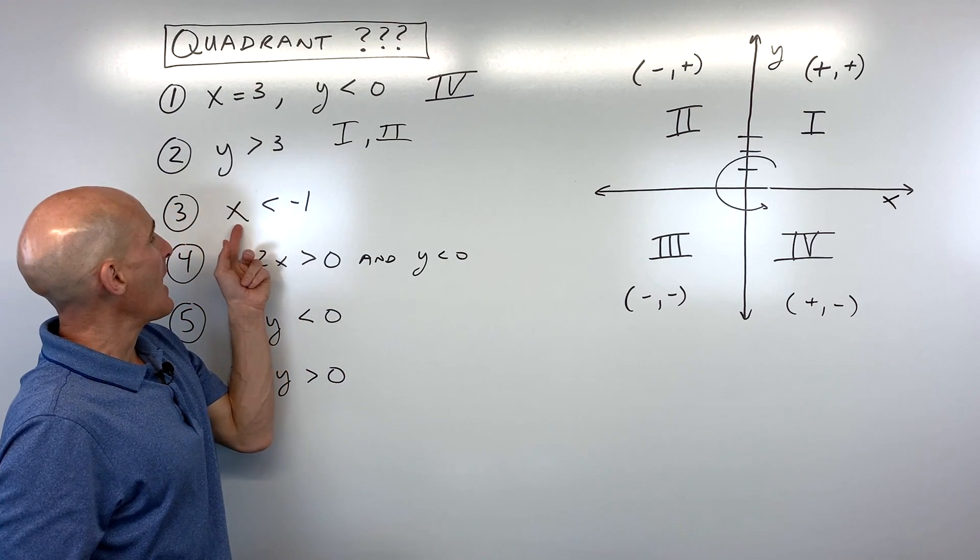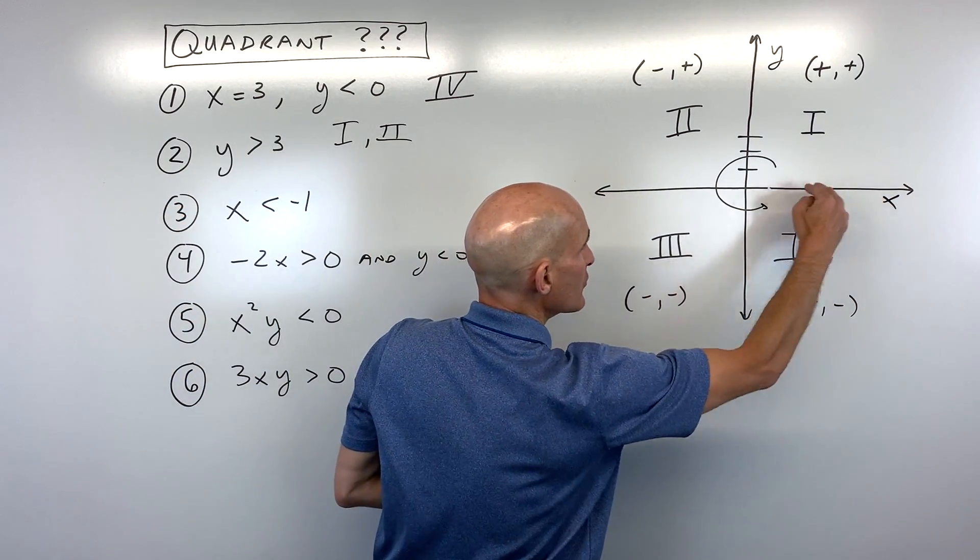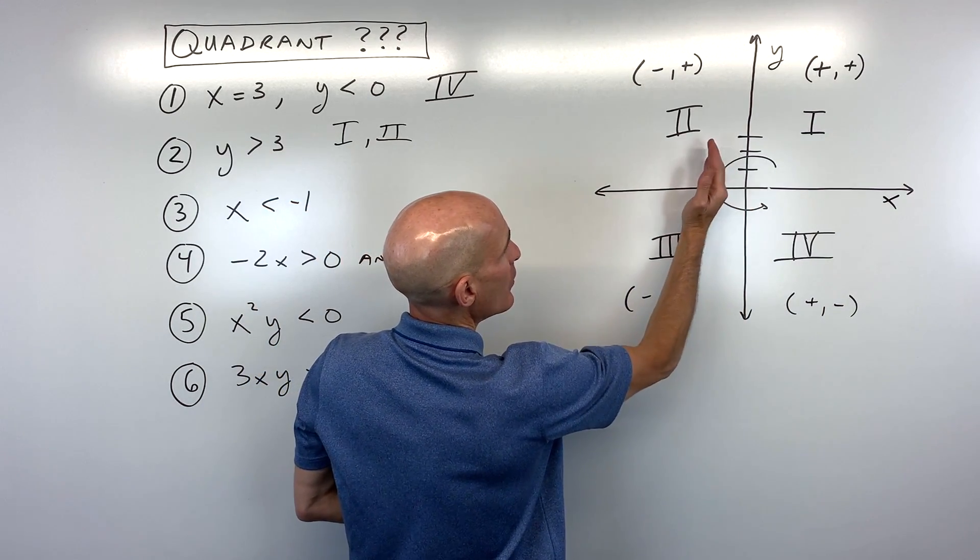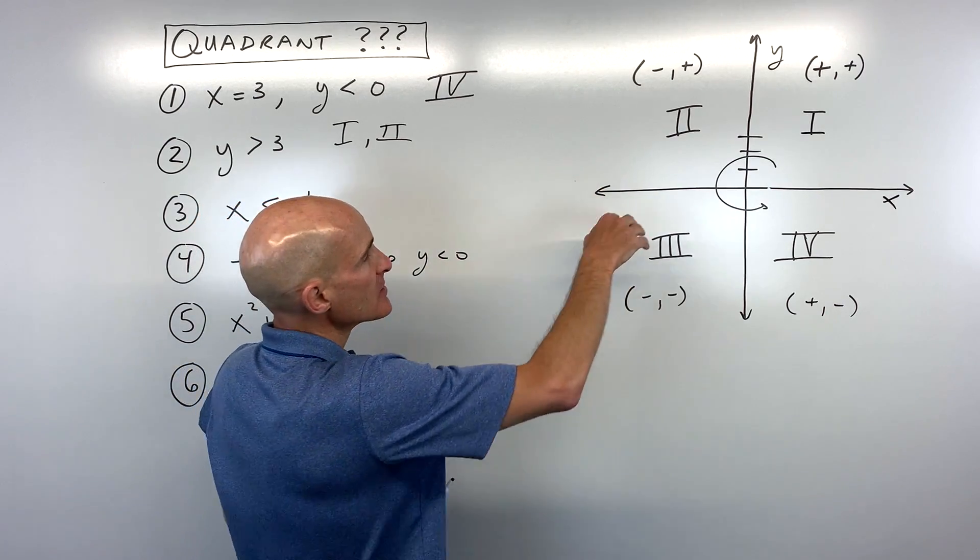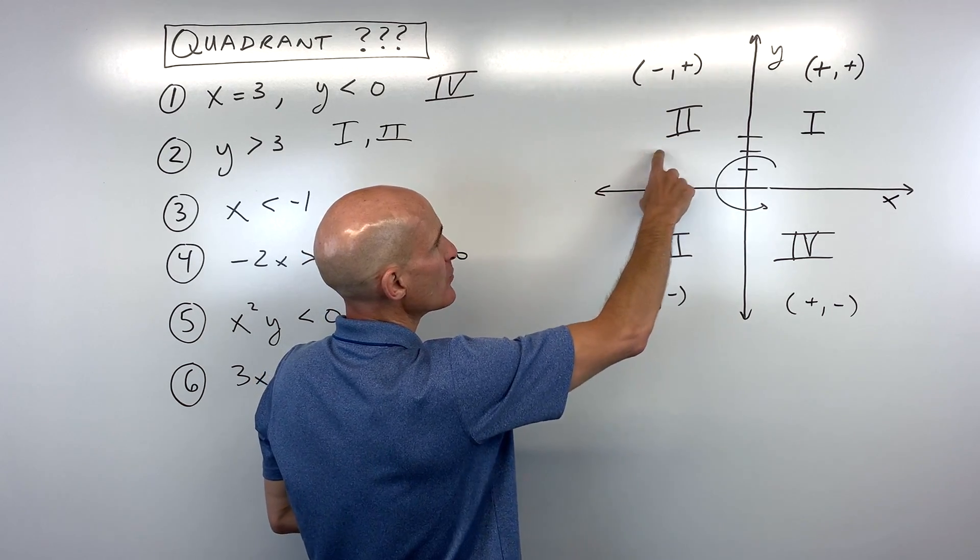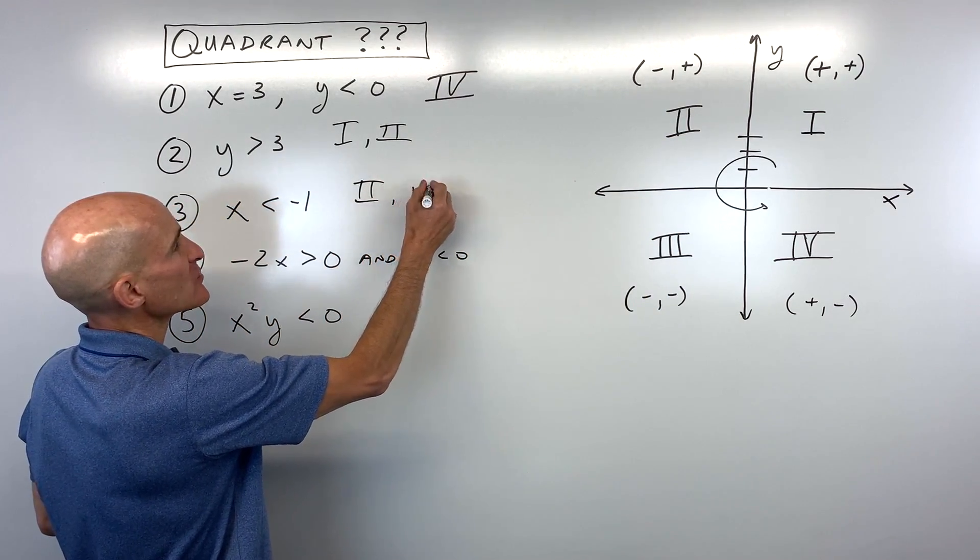Let's look at number three, x is less than negative one. So remember, x controls left and right, the horizontal direction. So if x is less than negative one, that means to the left of negative one. There's no restrictions put on the y-coordinate. So that means we could either be going positive up or negative down. So that's going to put us in the second or third quadrant. So again, we get two answers for that one.